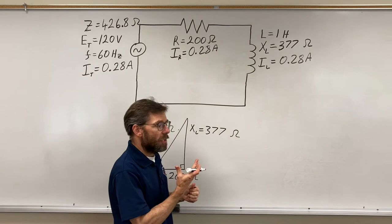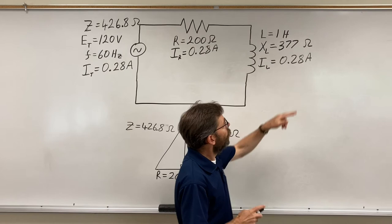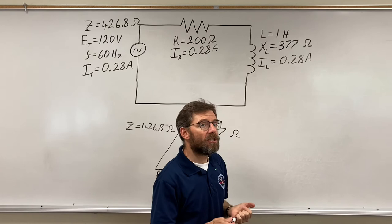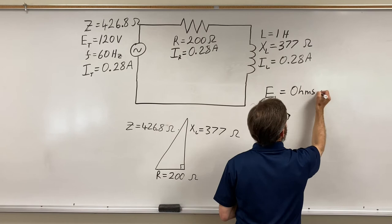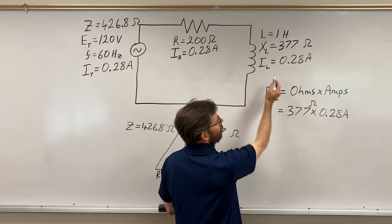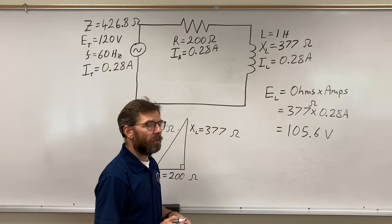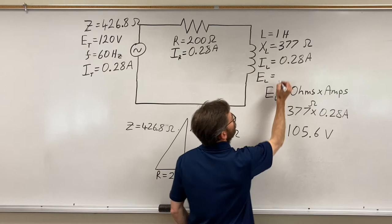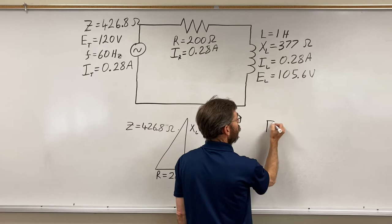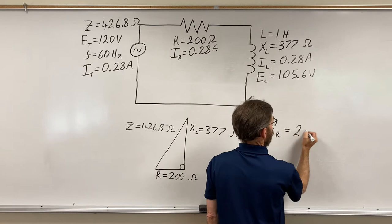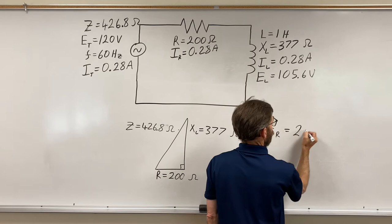Again, Ohm's law is the way you've seen it before, it just includes R. But here we don't have R, we have XL, which is ohms, however. So I can still say ohms times amps equals volts. So for EL, the voltage drop on the inductor, this is my ohms, that's my amps. Multiply them together, 105.6 volts. So my voltage drop here on the inductor is 105.6 volts. Let's try it again for the resistor. So we've got ohms times amps again. The voltage on the resistor is going to equal 200 times 0.28. 56 volts.